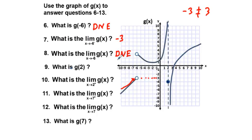Problem nine: what is g of 2? Going to x equals 2, we see a filled-in point at negative four. So g of 2 equals negative four.